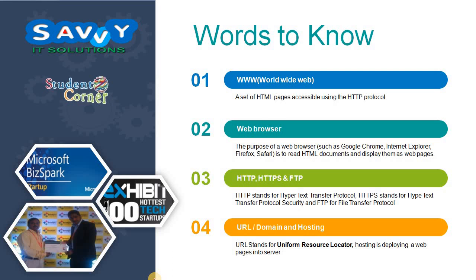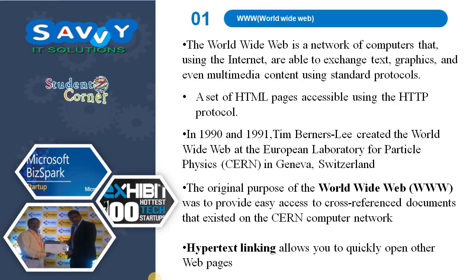Before entering into HTML, we need to know these keywords. The first one is World Wide Web. The World Wide Web is a network of computers that, using the internet, are able to exchange text, graphics and even multimedia content using standard protocols — a set of HTML pages accessible using the HTTP protocol.